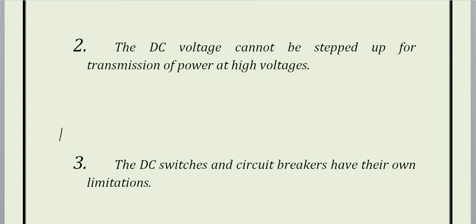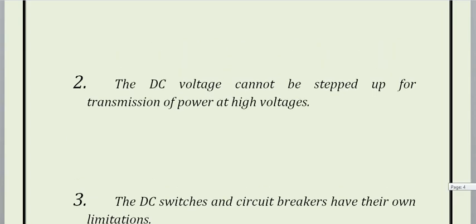Third limitation: DC switches and circuit breakers have their own limitations. HVDC circuit breakers costly होते हैं और उनकी circuitry complex होती है. AC के case में हर half cycle बाद zero crossing होती है — AC signal पर amplitude की value zero होना zero crossing है — लेकिन DC के case में अगर 5V, 120V, या 110V steady DC है तो उसमें zero crossing exist नहीं करेगी. यह circuit breaker को design करने में एक challenging task होता है और उसकी अपनी limitation भी है, costly भी है.